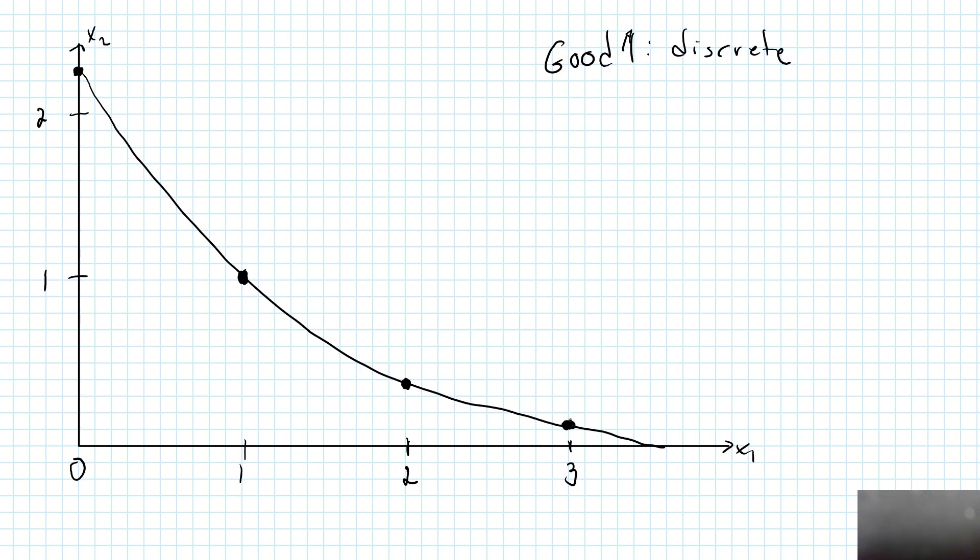These are the only four possible bundles on the initial indifference curve. She is indifferent between these four bundles, but all the remaining bundles on the original indifference curve must be removed. So this is an indifference curve when good 1 is discrete and preferences are well behaved.